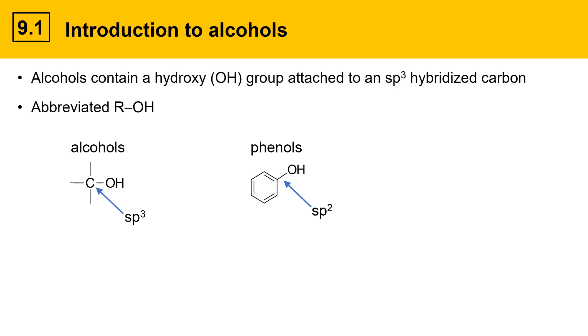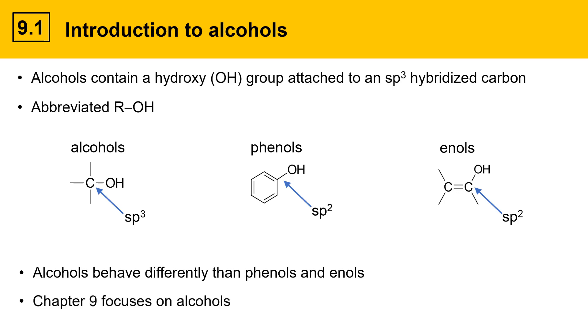Another class of related compounds are the enols. Enols have an OH group attached to a carbon as well, and similarly to phenols, their carbon is sp2 hybridized. Alcohols behave differently than phenols and enols. The hybridization of the carbon makes a big difference. In this chapter, chapter 9, we're going to focus on reactions of alcohols.